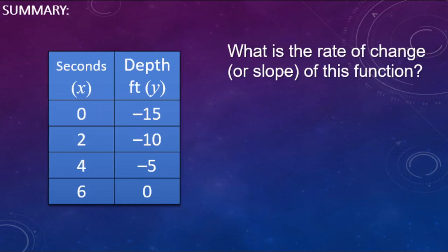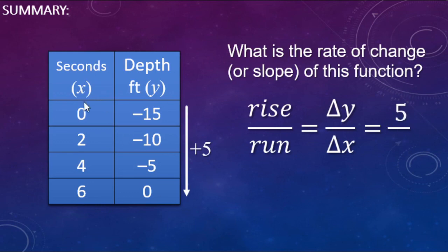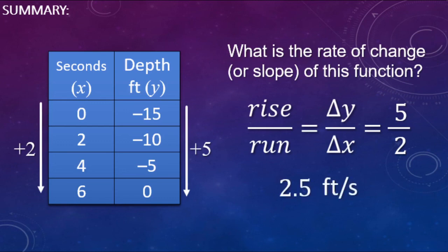Quick summary: slope or rate of change is rise over run — the right column (dependent variable) over the left column (independent variable), or change in Y's over change in X's. In the submarine example, depth goes up by fives and time goes up by twos, giving a slope of 5 over 2. Dividing gives 2.5 — the unit rate of 2.5 feet per one second. I hope this helps and you have a great day!